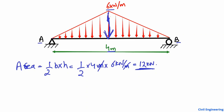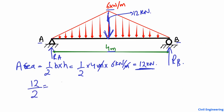This is now a point load of 12 kilonewtons. Simply dividing 12 by 2, we get the support reactions. Half of the load is transferred to support RA and half to support RB. So 12 divided by 2 equals 6 kilonewtons — RA equals 6 kilonewtons.